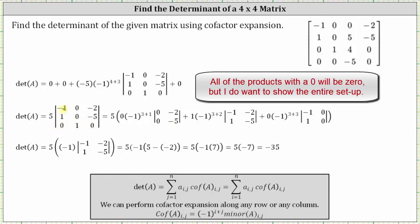We move to the second element in row three, which is one, giving us plus one times negative one raised to the power of three plus two — the exponent is three plus two because the element of one is in row three, column two. We eliminate row three and column two, giving a two by two determinant where row one is negative one, negative two and the second row is one, negative five. The last element in row three is zero in row three, column three: plus zero times negative one raised to the power of three plus three. Eliminating row three and column three gives the remaining two by two determinant where the first row is negative one, zero and the second row is one, zero.